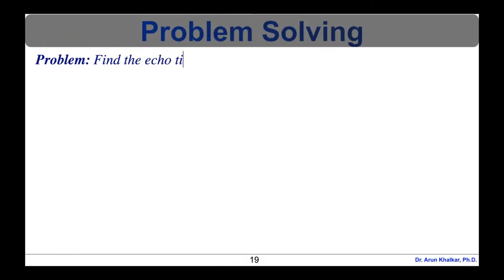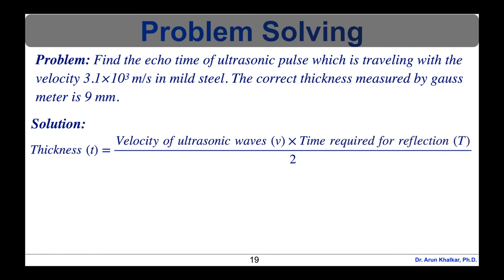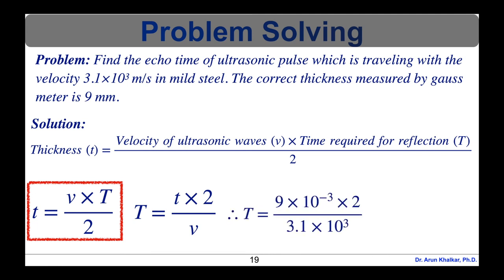Now let's see one problem which is based on ultrasonic testing. Find the echo time of ultrasonic pulse, which is traveling with velocity 3.1 × 10³ meters per second in mild steel. The correct thickness measured by gauge meter is 9 mm. The solution is as follows. We have the formula: thickness t equals velocity v times time T divided by 2. Rearranging, T equals t times 2 divided by v. Therefore, T equals 9 × 10⁻³ times 2 divided by 3.1 × 10³. After calculating, we get time T equals 5.8 microseconds. So this is the echo time of ultrasonic pulse traveling with velocity 3.1 × 10³ meters per second in mild steel.